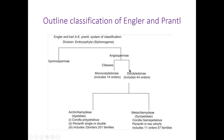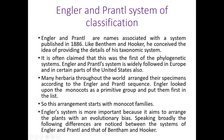This is the outline classification of Adolf Engler and Karl Prantl. Now let us see some additional characteristic features of their system. Engler and Prantl are names associated with the system published in 1886. Like Bentham and Hooker, they conceived the idea of providing the details of a taxonomic system. It is often claimed that this was the first of the phylogenetic classification systems. This system is widely followed in European countries and in some parts of the United States. In our country it is followed for theoretical knowledge, while for practical purposes we use the natural classification system by Bentham and Hooker, because it is very easy to understand.